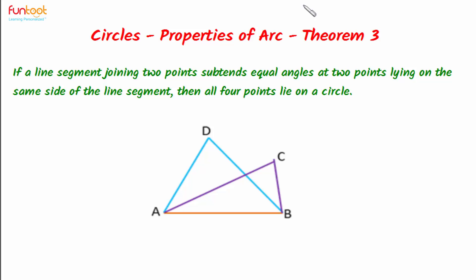Let's do a theorem. According to this theorem, if we have a line segment AB, and this line segment AB subtends equal angles at two points D and C which lie on the same side of AB, and these angles are equal, then we have to prove that points A, D, C, B lie on a circle.